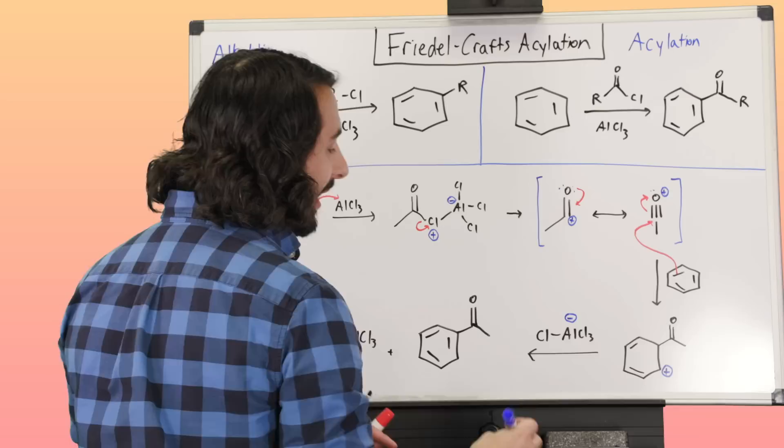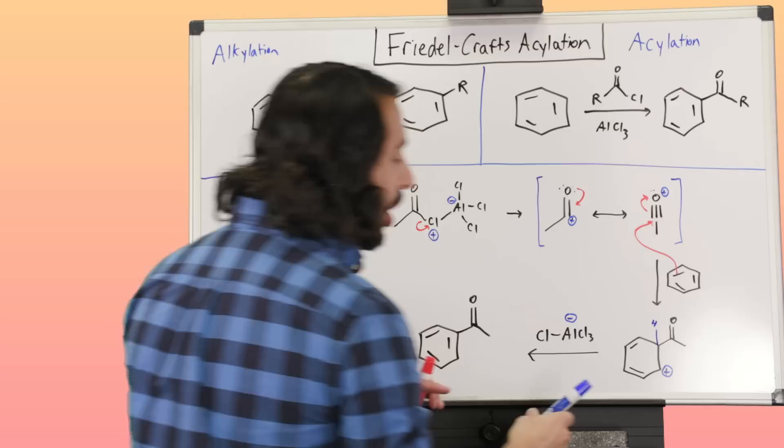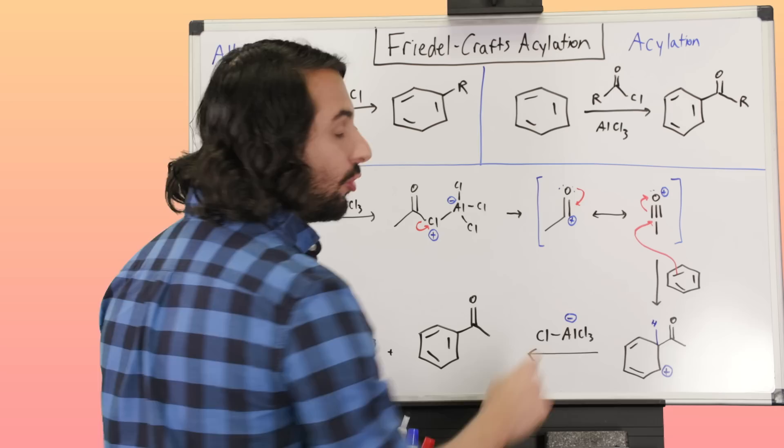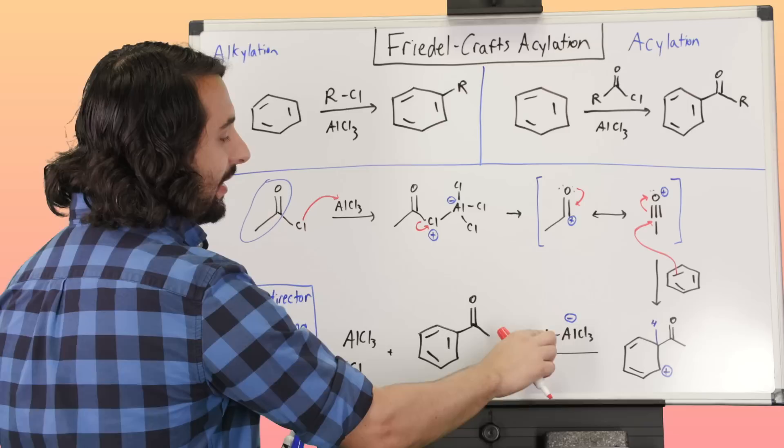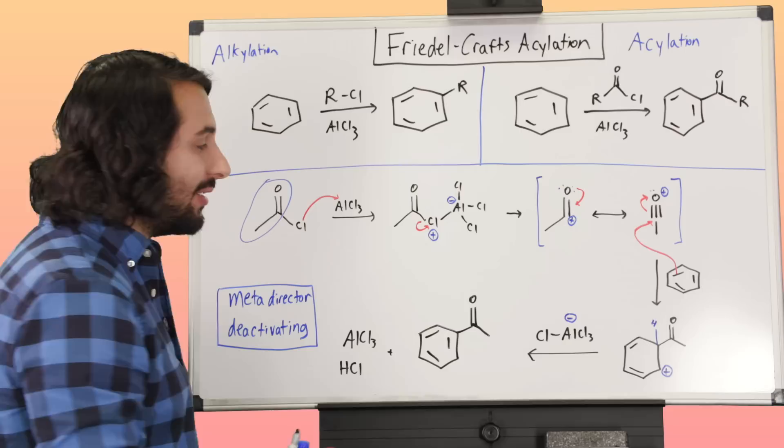And then we are just going to do, just like any other EAS reaction, we've got to go ahead and get that proton. Remember, it is specifically the proton on the same carbon where that group just got on there. And so we still have this, remember what happened here, this all left, when this bond broke we got AlCl4 minus. This aluminum still has four covalent bonds, that still has a formal negative charge.